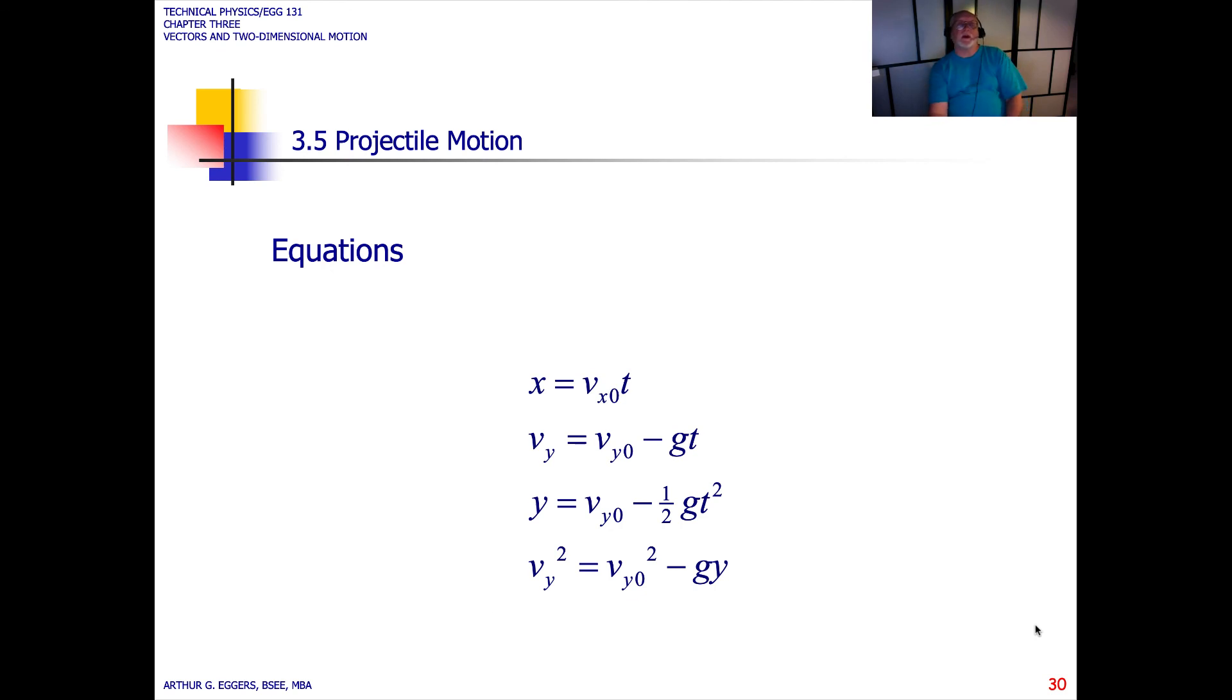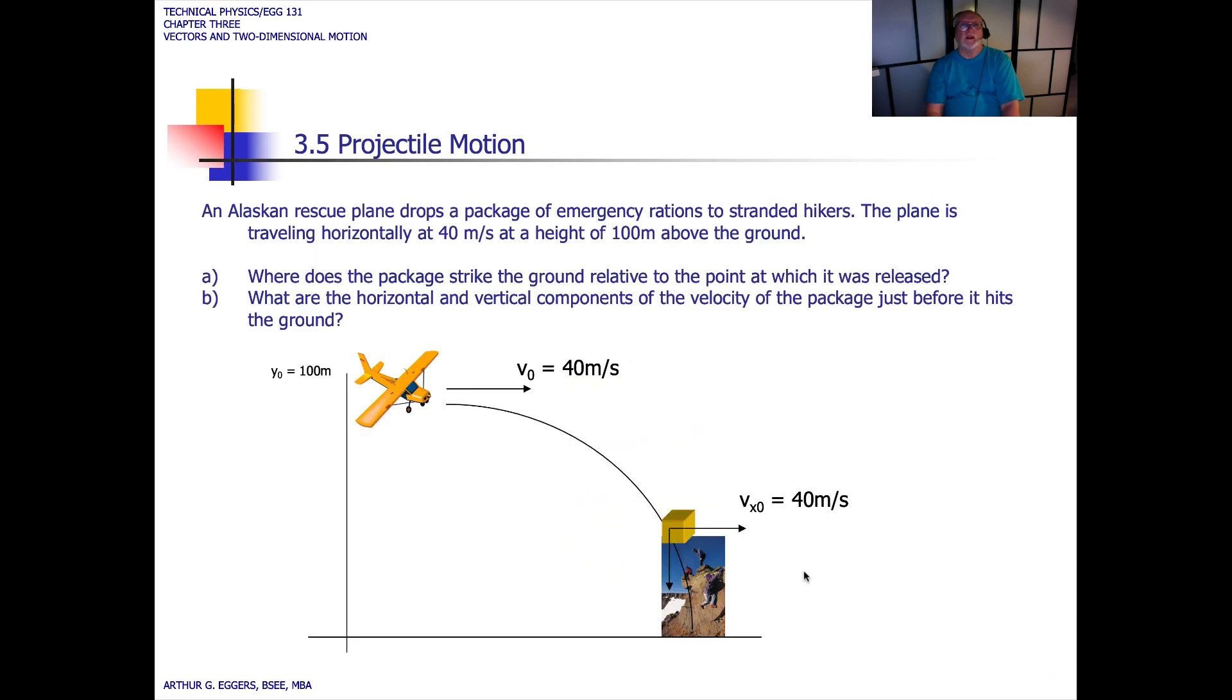The equations that become important in doing these types of problems, write these down in your notebook. When solving for displacement or a distance x: v sub x naught times t. If we're solving for a velocity in the y direction: vy initial minus gravity times time. If we're looking at a distance in the y direction: vy naught minus one-half gravity times t squared. And if we're looking for velocity squared in the y direction, we have vy naught initial squared minus g times y. Let's go ahead and stop this one here, and we'll come back and work a couple projectile motion problems so we can discuss it.